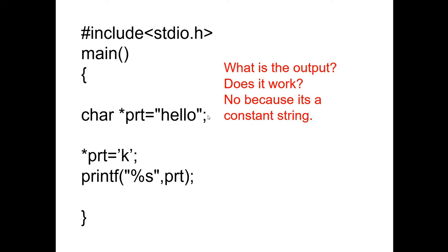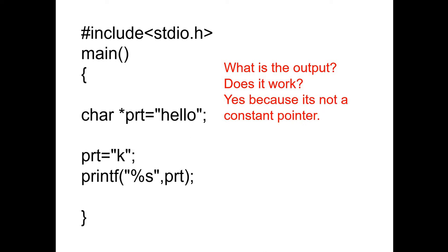What about 'char *ptr = "hello"'? Here, hello becomes a constant string, not a constant pointer. So you cannot edit the string — you cannot change the value 'hello'. However, because ptr is not a constant pointer, you can change ptr to point to another address. That is possible.